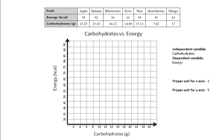Hi guys, and welcome to the second part of creating our scatter plots. What we're going to look at right now is actually plotting the data points we're given and then drawing what we call a line of best fit — or a best fit line, you can say it either way. The first step is to just plot the points we're given. Remember that carbohydrate is our x and energy is our y.